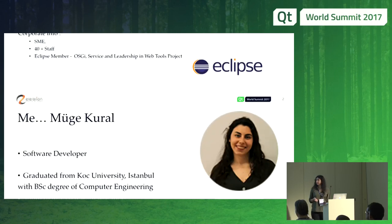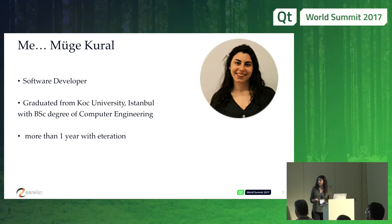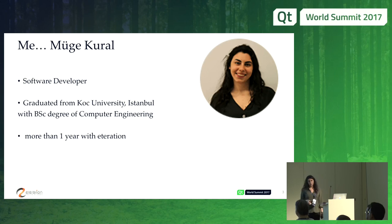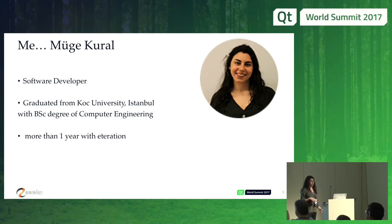I am Müge Kural, a software developer. I graduated from Koç University, Istanbul, with a bachelor's degree in computer engineering. I have been working at Iteration for more than one year. This electric car embedded project is my current project at the company.